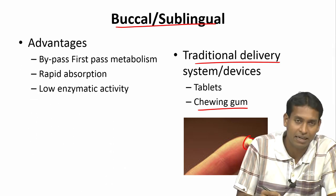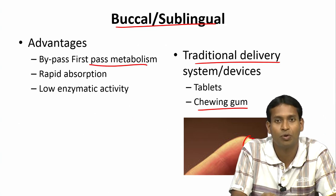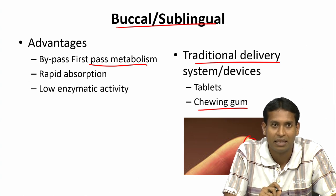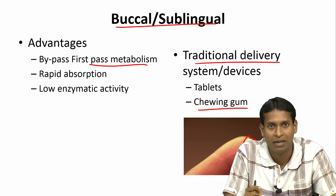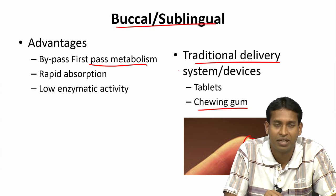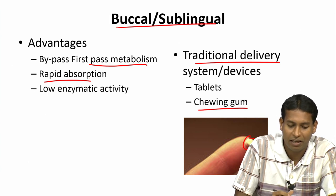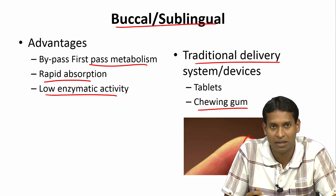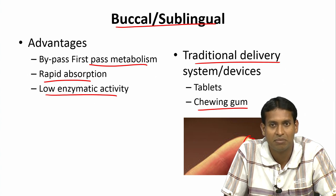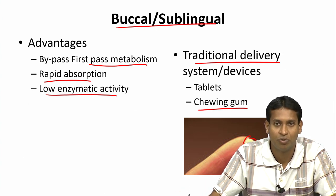Some advantages of buccal delivery are that it avoids first-pass metabolism. The absorption into the circulation happens through a different blood vessel than when the drug goes through the stomach. This actually avoids first-pass metabolism, there is rapid absorption of the drug, and there is not a high concentration of enzymes as found in the stomach. Even though there are some enzymes in the mouth, they are in much lower amounts and of fewer types, so the drug is much more protected.